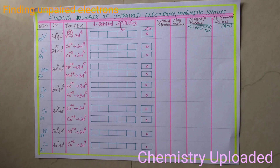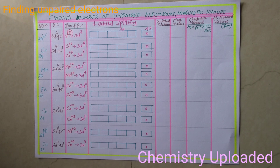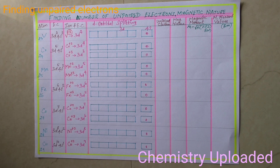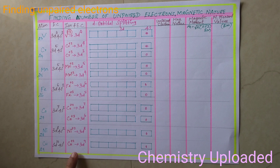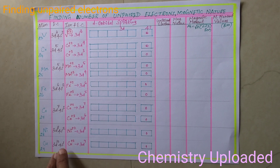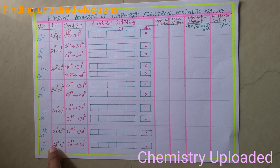Vanadium 3+ forms in the complex. For chromium, mostly chromium 3+ is involved in complexes. Manganese can be +2 or +3. Iron can be +2 or +3. Cobalt has two possibilities: +2 or +3. Nickel is always +2 — only one possibility for nickel. For copper in complexes, copper 2+ is involved, which gives 3d9, since +2 removes 1 electron from 4s and 1 more from 3d10.